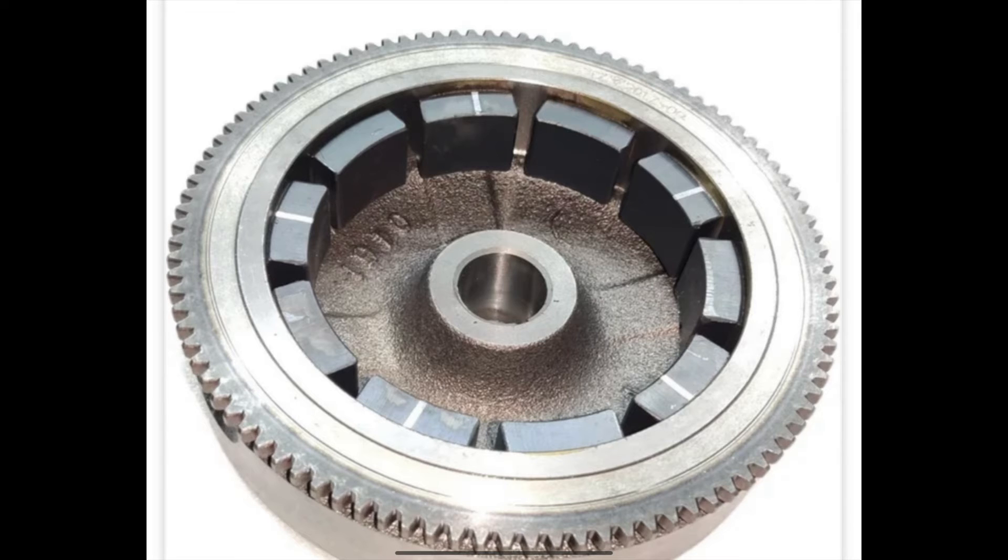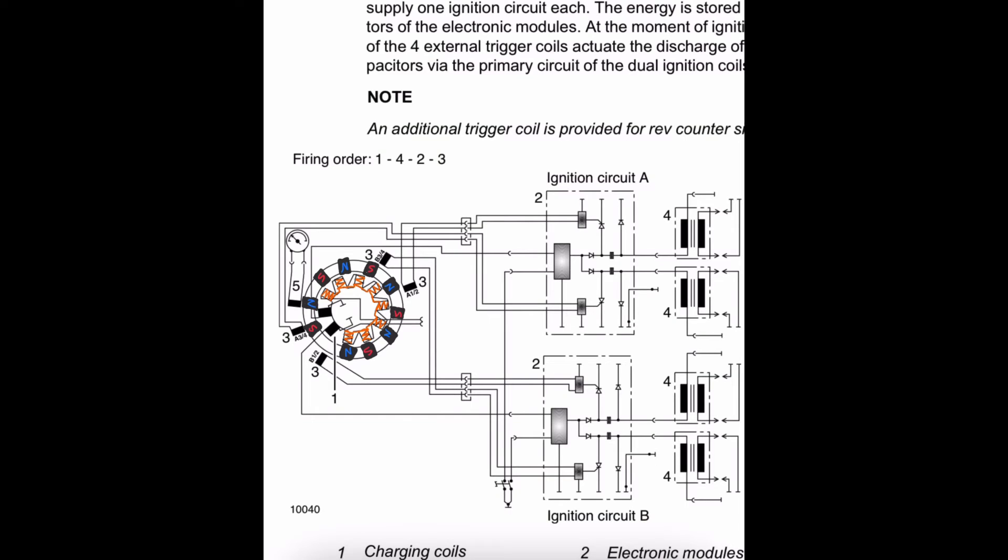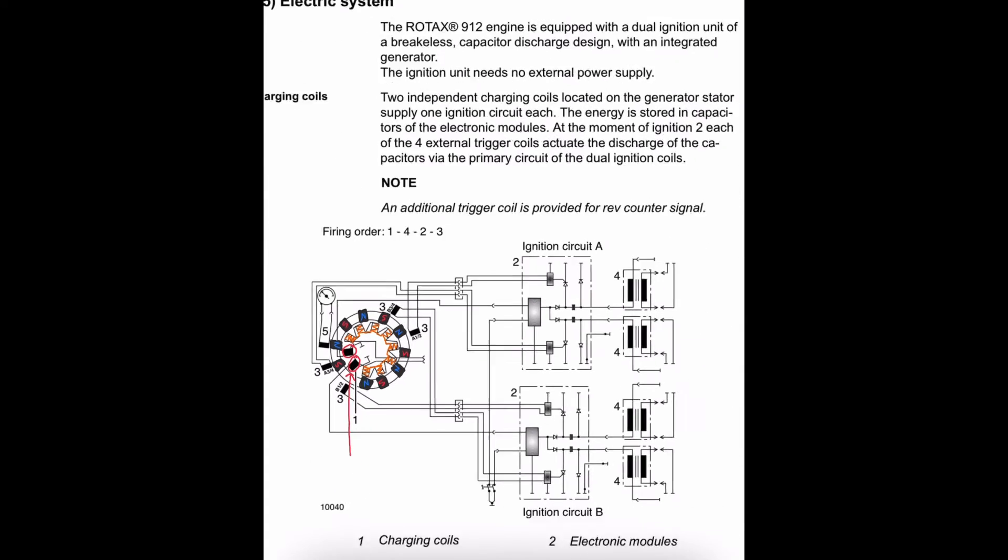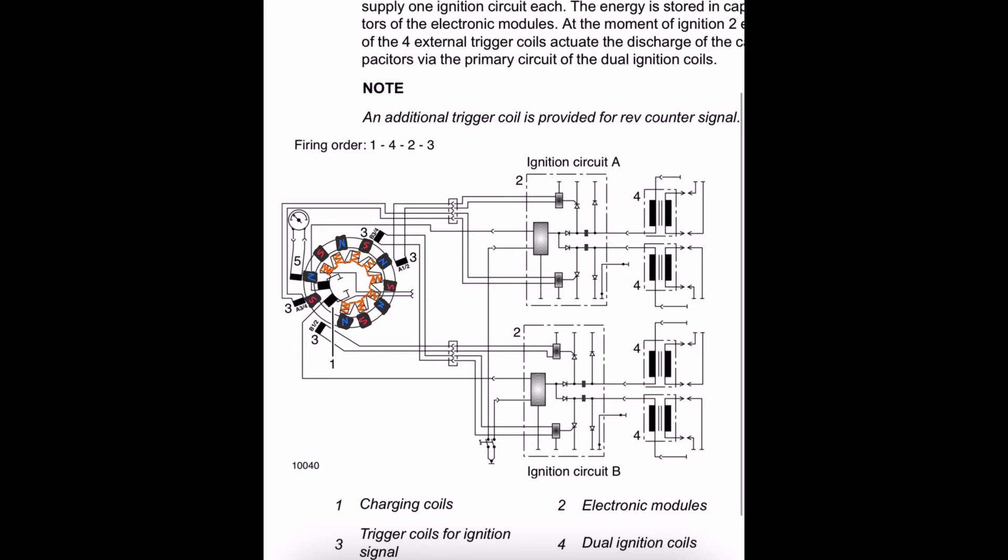As the magnetic flux is being induced in the stator wires, connected to the stator wires are two charging coils. The charging coils, just as their name implies, are using this magnetic flux to charge dual capacitors inside the electronic ignition modules. If we look at our schematic, we can see the charging coils right here, sending that flux to the capacitors.